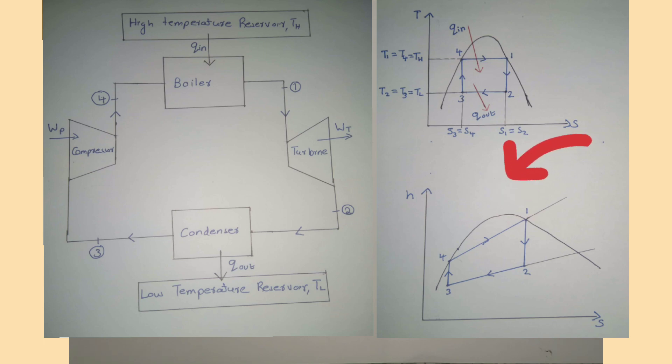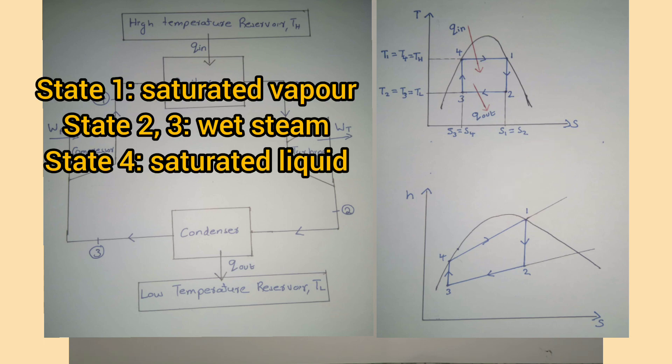The TS and HS diagrams are also shown. Here state 1 is saturated vapor, states 2 and 3 are wet steam, and state 4 is saturated liquid.